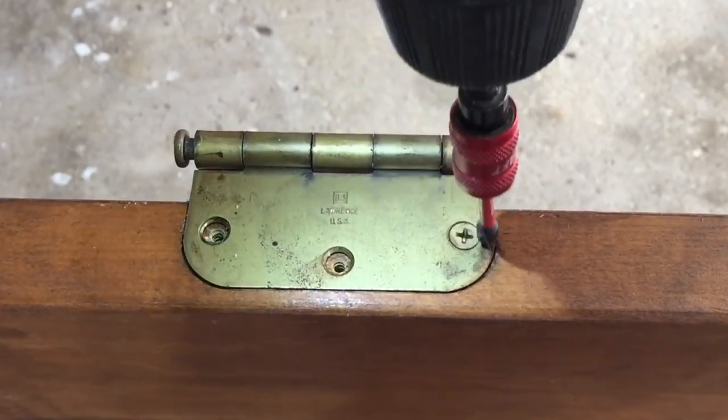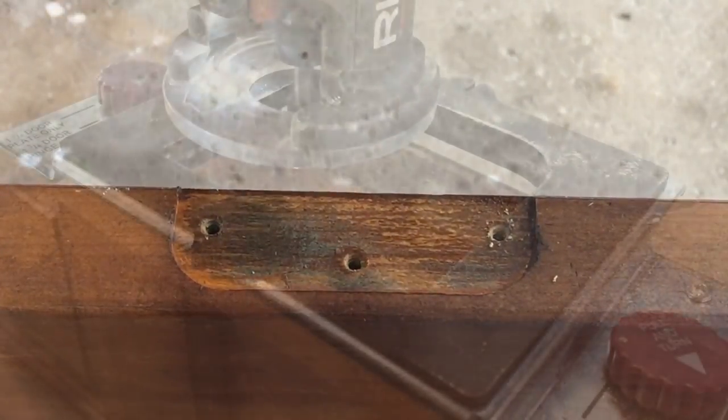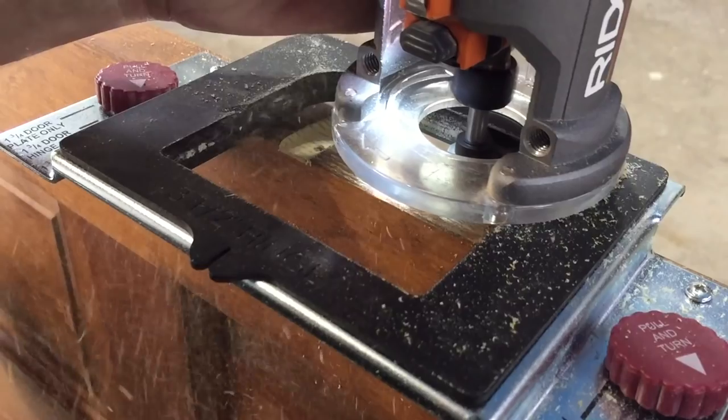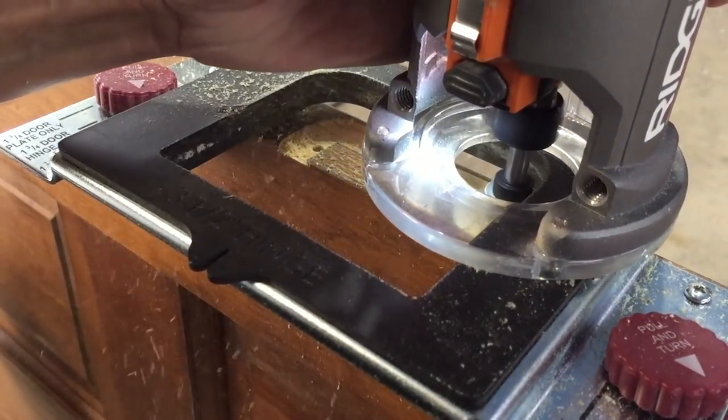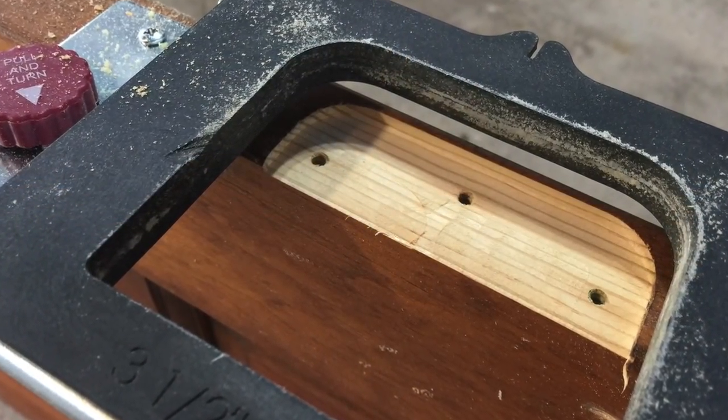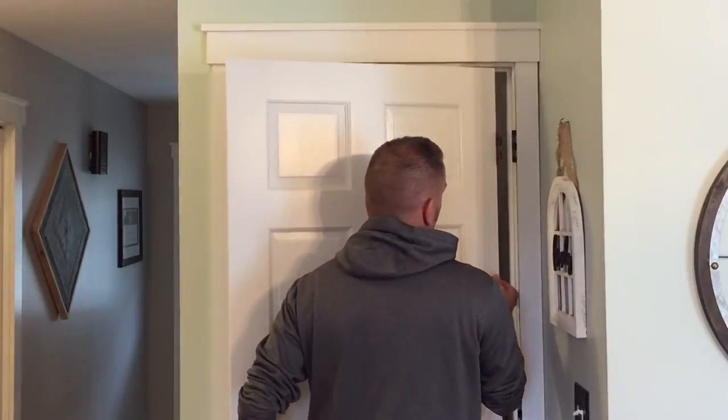You can also use the template kit to recess existing hinge pockets. Remove the door from the jamb and remove all the hinge plates. Measure and line up the template and route the same as you would with a new door. Be sure to check your bit depth before you route. Once you've finished routing you can rehang your door.